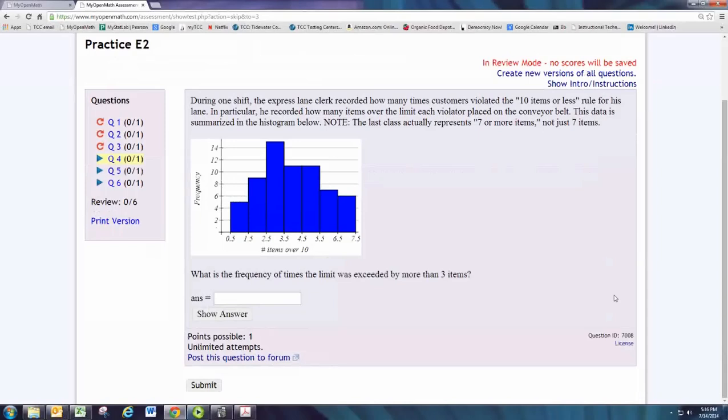During one shift, the express lane clerk recorded how many times customers violated the 10 items or less rule for his lane. In particular, he recorded how many items over the limit each violator placed on the conveyor belt. This data is summarized in the histogram below.